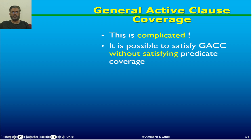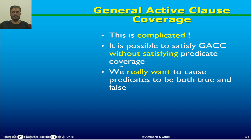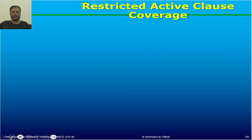This seems complicated, and it is possible to satisfy GACC without satisfying predicate coverage, because we are not imposing any strict conditions. Sometimes it may happen that you achieve GACC without fulfilling predicate coverage. But we really want to cause predicates to be both true and false — we want coverage criteria where achieving class-level coverage also affects the predicates and causes them to change values from true to false.